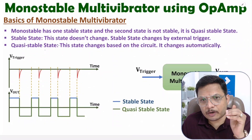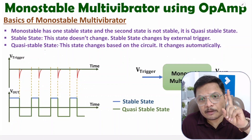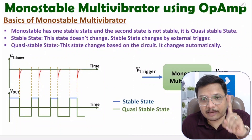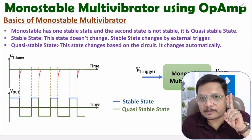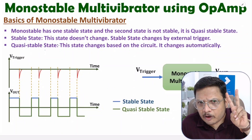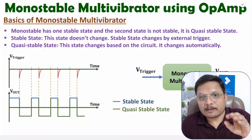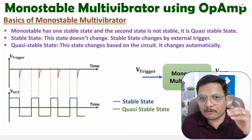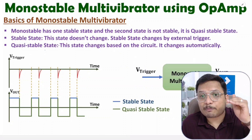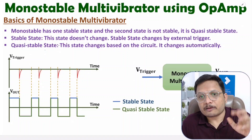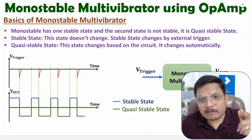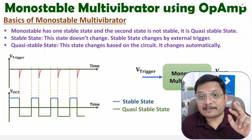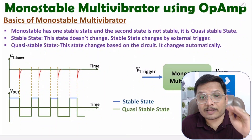Monostable multivibrator — what does it mean? Monostable means one state is stable. There are always two states. Like in digital we have 0 and 1, likewise in analog we have plus V and minus V. So monostable multivibrator has one stable state and a second quasi-stable state.